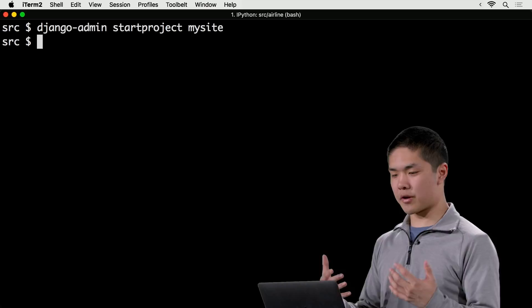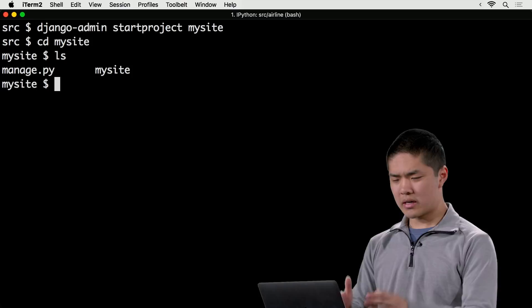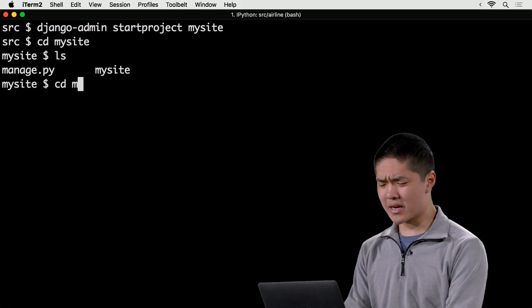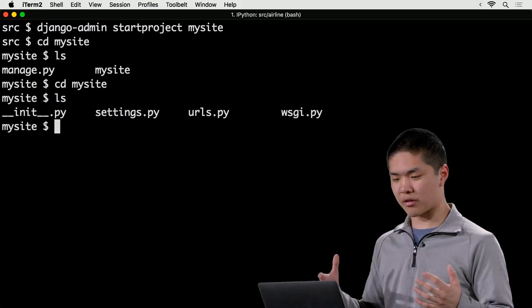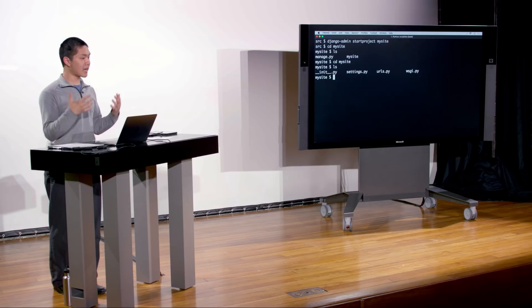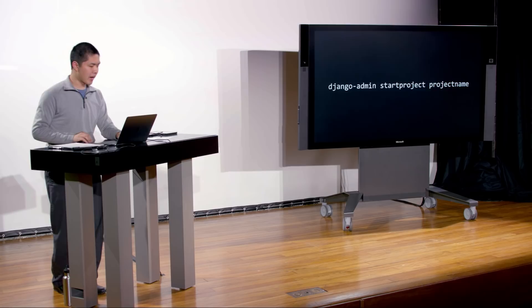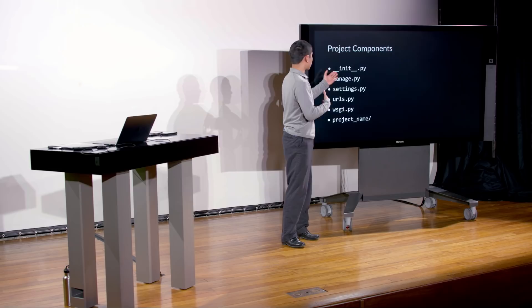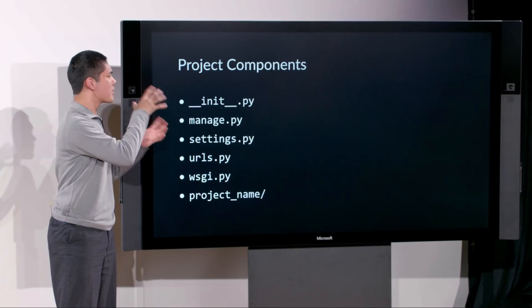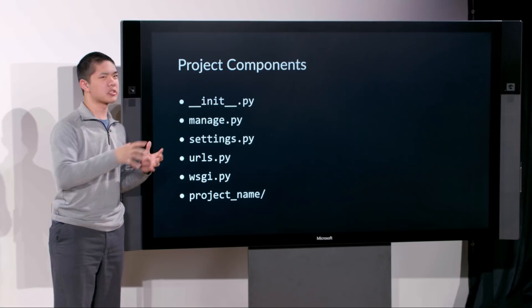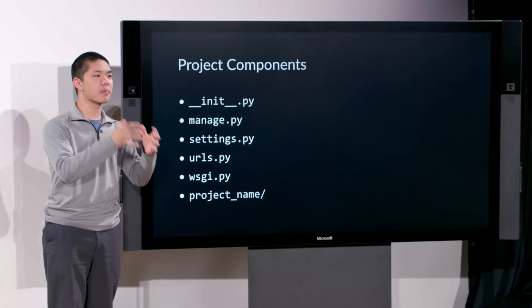If I CD into mysite, I see a file called manage.py and another directory inside also called mysite. Inside that directory are files created for me by default: init.py, settings, URLs, and WSGI. The init.py file tells us that the mysite directory is a Python package — a collection of different Python files grouped together. Django is built on the idea of these Python packages, where we'll end up with multiple different groups of files each serving a slightly different purpose.